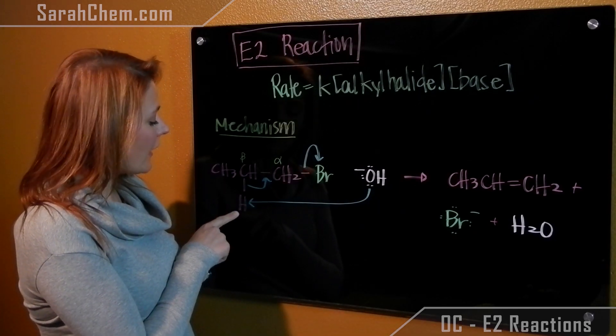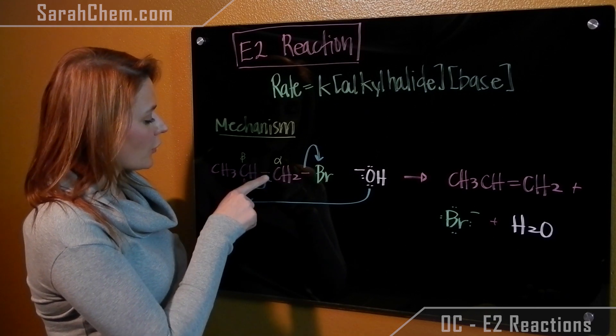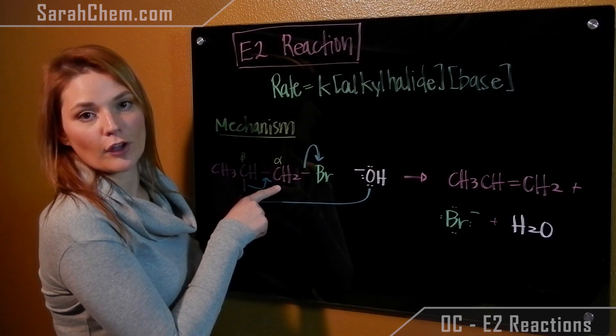The hydroxide attacks our H and the bond between the beta carbon and the H is now transferred to be between the beta carbon and the alpha carbon.